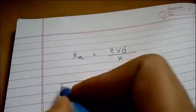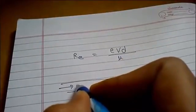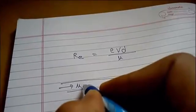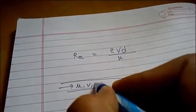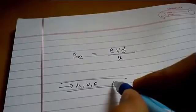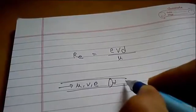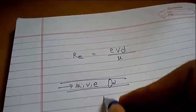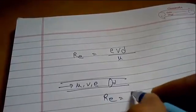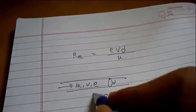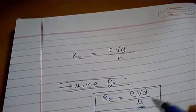Suppose this is a pipe and a fluid of viscosity mu is flowing through with a velocity V of density rho through this pipe of diameter D. Then the Reynolds number is given by the equation Re = ρVD/μ, where mu is the viscosity.